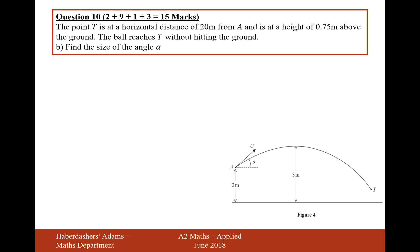Let's move on to part B — a big one at 9 marks, so we expect a lot of work. The point T is at a horizontal distance of 20 metres away from the starting point A, and at a height of 0.75 metres above the ground. The ball reaches T without hitting the ground. Find the size of angle alpha. We're going to use this position coordinate T in both vertical and horizontal SUVAT.